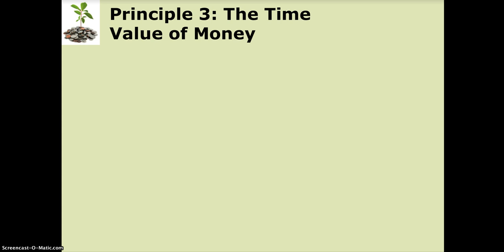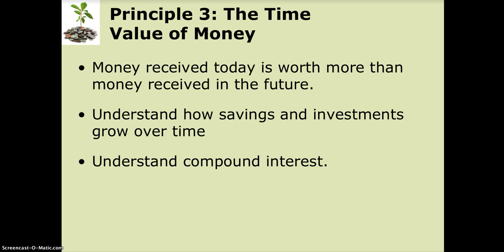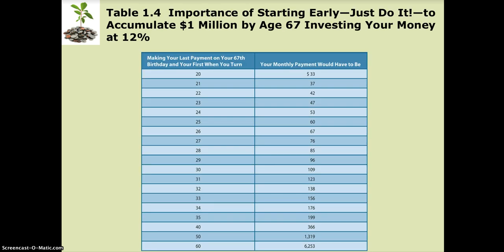Principle three, which is critical, is the time value of money, which we'll cover in great detail in later chapters. Suffice to say that a dollar today is worth more than a dollar tomorrow, because you can invest a dollar today and have more tomorrow than if you waited. Here's an example: if you took $33 a month at the age of 20 and earned 12% per year on that, you would accumulate a million dollars by the age of 67.